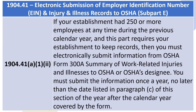1904.41(a)(1)(ii): If your establishment had 250 or more employees at any time during the previous calendar year, and this part requires your establishment to keep records, then you must electronically submit information from OSHA Form 300A, Summary of Work-Related Injuries and Illnesses, to OSHA or OSHA's designee. You must submit the information once a year, no later than the date listed in Paragraph C of this section of the year after the calendar year covered by the form.